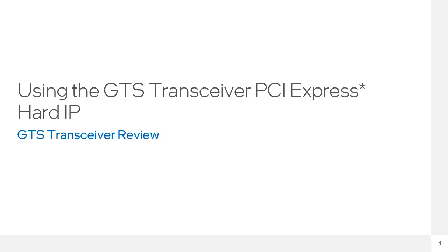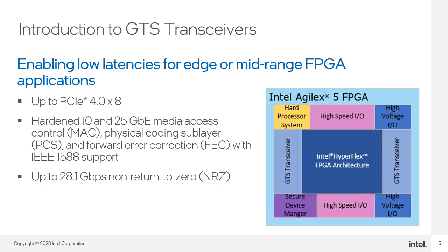Let's start with a review of the GTS transceivers. GTS transceivers are found in mid-range and edge FPGAs, targeting applications that require high-bandwidth, low-latency transfers. These applications must also balance this performance with cost and power. The Agilex X5 FPGA device family is an example. These transceivers support PCIe Express Gen 4 up to by 8. They contain hardened Ethernet MAC supporting 10 and 25G. The transceivers can run up to 28.1 gigabits per second NRZ for custom or non-standard protocols.